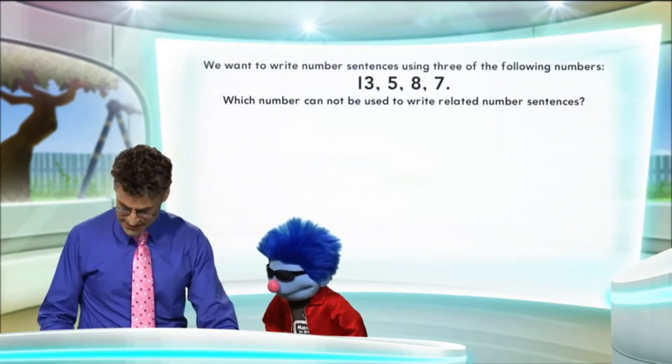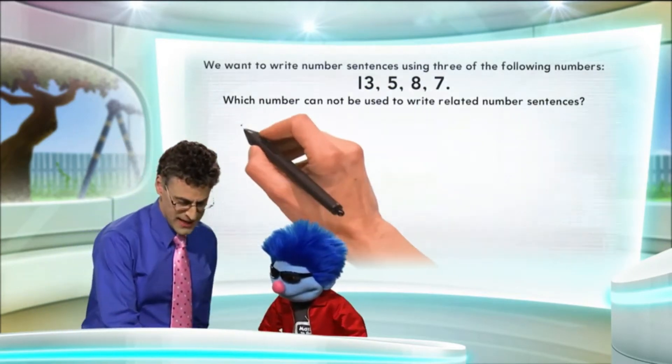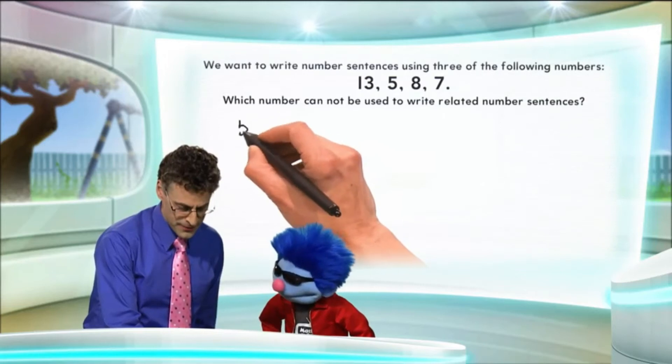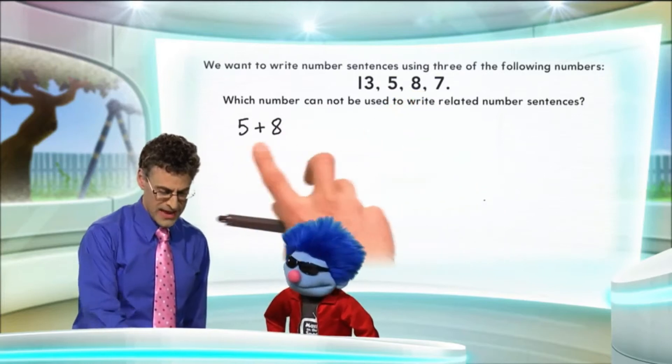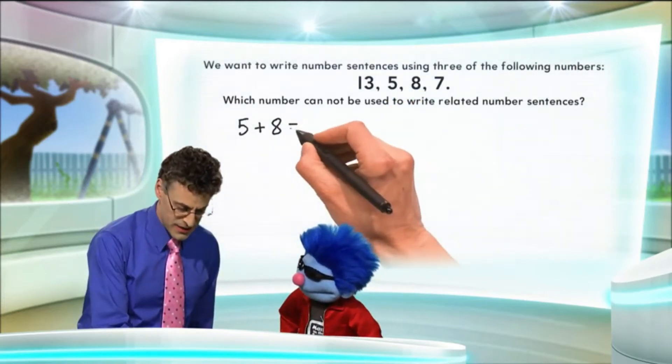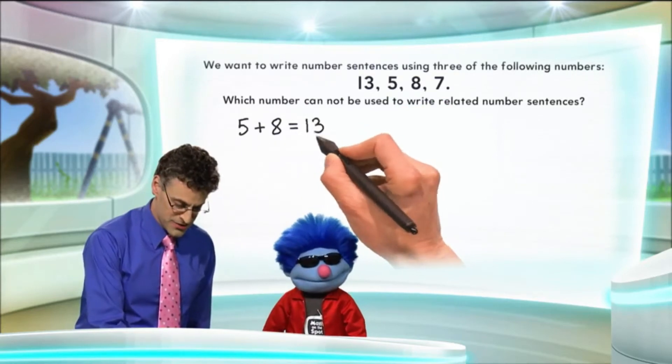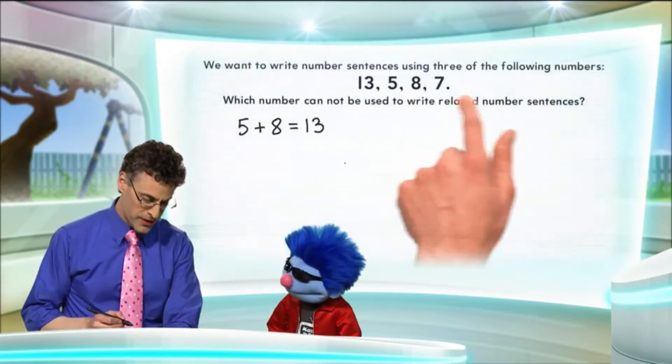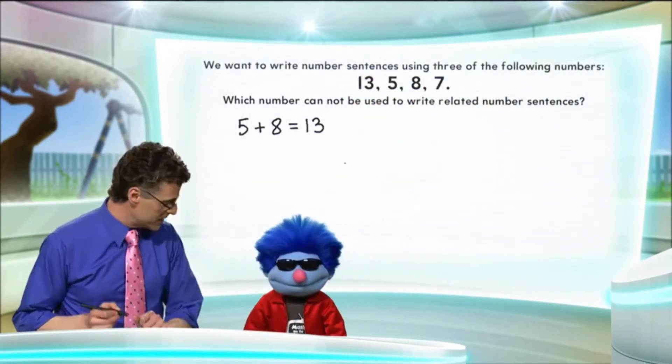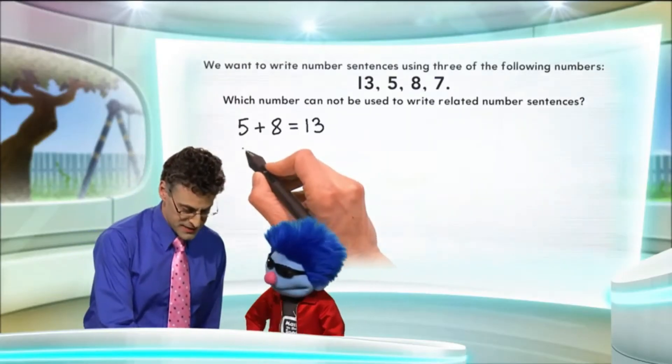So for example, let's try some and see what you think. The first one I want to take a look at is, what if I take five and add eight? So notice that I'm using two of the numbers, and if I take five plus eight, the answer, if we think about it, is in fact thirteen. Hmm. So there's a good example of a number sentence that uses all three of those numbers, and we're not using seven though, right? No, we're not.